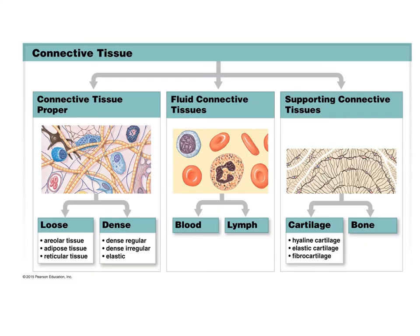Blood is a type of liquid connective tissue. The cells include red and white blood cells, and the matrix is liquid plasma. It functions to transport respiratory gases, nutrients, wastes, and other substances. Blood and lymph will be studied in more detail in A&P 2. Supporting connective tissue consists of cartilage and bone; there are three types of cartilage: hyaline, elastic, and fibrocartilage.